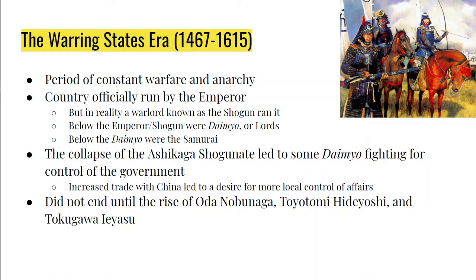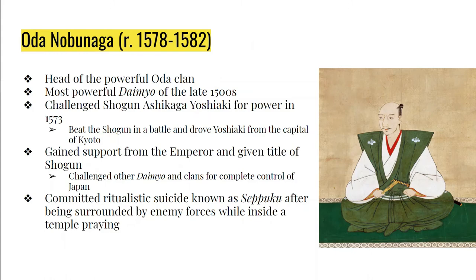The first of these three unifiers is Oda Nobunaga, in control of the government from 1578 to 1582. He's the head of the powerful Oda clan and the most powerful Daimyo of the late 1500s, known as the first great unifier in Japanese history. In 1573, Nobunaga challenged the then-Shogun Ashikaga Yoshiaki, defeated his army, drove him from the capital, and gained control of the government. This officially ended the Ashikaga Shogunate, and Nobunaga was given the power of the government by the emperor.